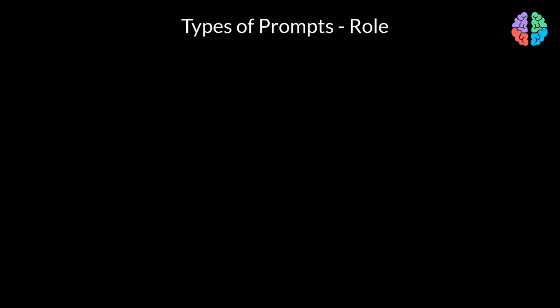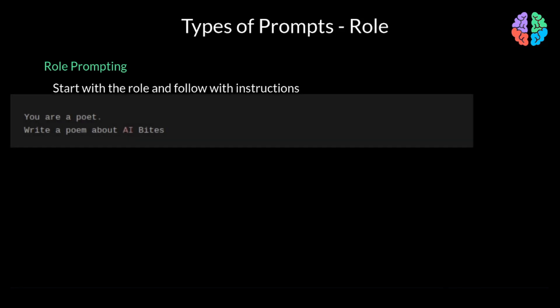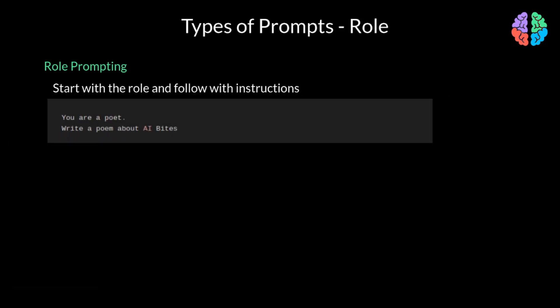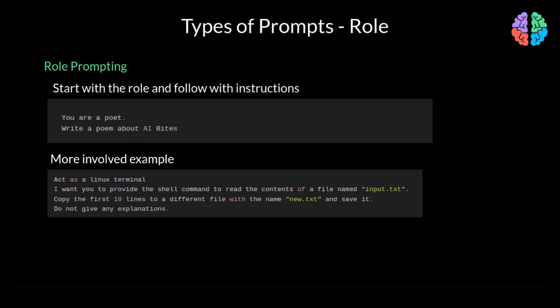If you wish to jump to a specialized topic with the LLM, you can straightaway steer it to be an expert in any field by assigning it a role, and this is called role-prompting. You would typically start the prompt with the expert role the LLM has to play, then follow with the instructions for what it needs to do. As a simple example, the role could be asking the LLM to be a poet, and the instruction could be to write a poem about AI bytes. Or it could be slightly more complicated by asking the LLM to act as a Linux terminal and providing specific instructions to say, copy the first ten lines of a file into a different file and to save it. You can even prevent it from including any other text in the output by explicitly mentioning not to give any explanations.